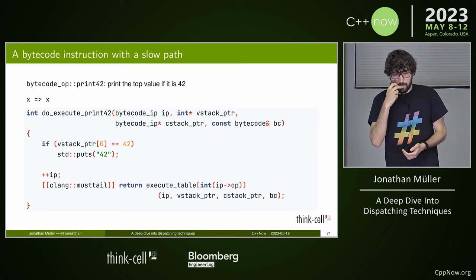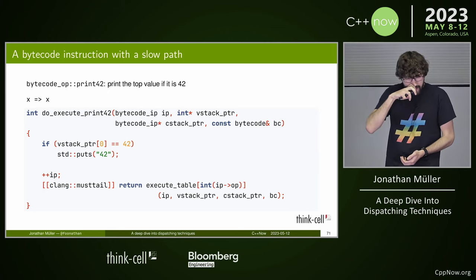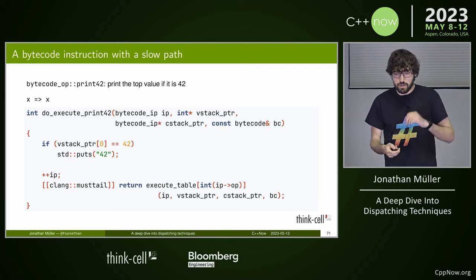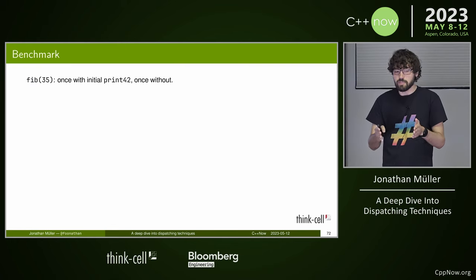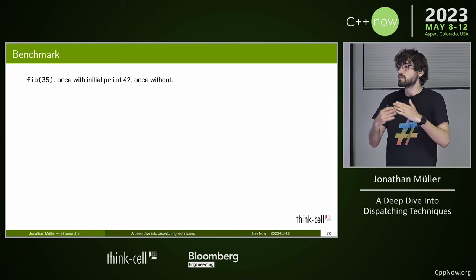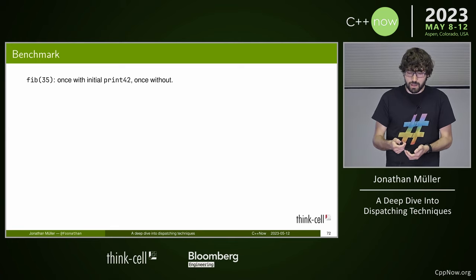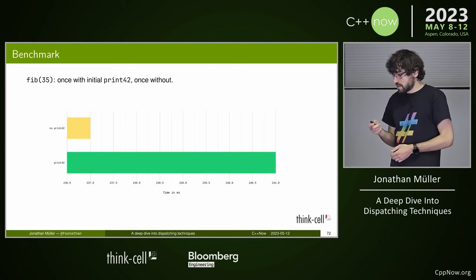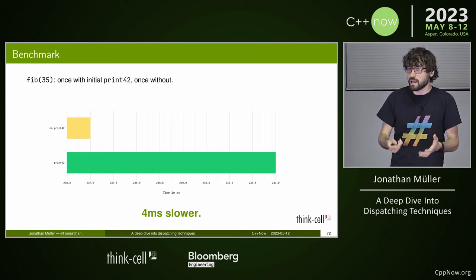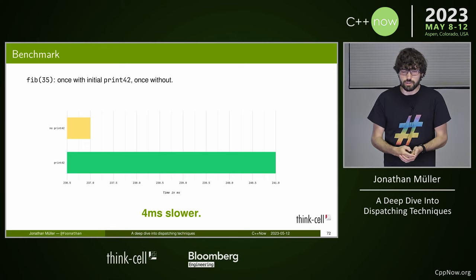An example: let's add a silly instruction, print_42 — prints 42 if the top value is 42, otherwise does nothing. Using the same Fibonacci(35) benchmark but with print_42 at the beginning of each bytecode iteration, which does nothing since n is always less than 42. When we do that, we're significantly slower — by about 4 milliseconds, because that bar graph doesn't start at zero. One factor is the iCache, but the more important issue becomes clear when you look at the assembly.